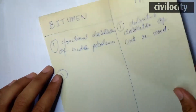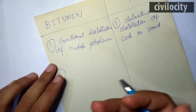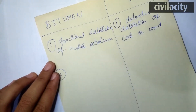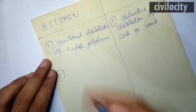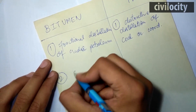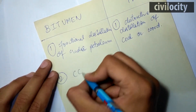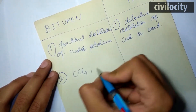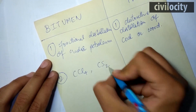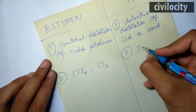The second point is the solubility of both materials. Bitumen is soluble in carbon tetrachloride (CCl4) and carbon disulfide, whereas tars are soluble in toluene.